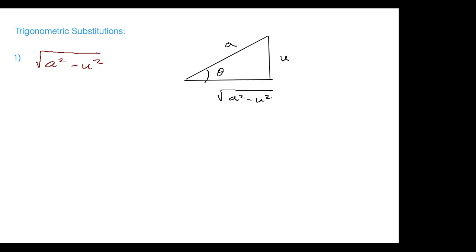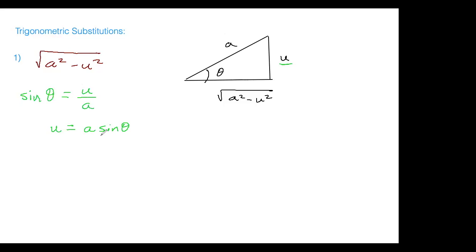In that integral, if you think of u in terms of trigonometry — u is the side opposite from angle theta, and a is the hypotenuse — then using SOH-CAH-TOA, the sine of theta is u over a. This suggests the substitution u = a sin θ. Also notice that the adjacent side is √(a²-u²), which is what triggered us to look at this substitution in the first place.